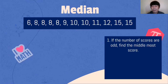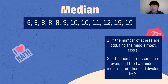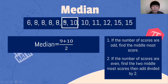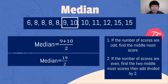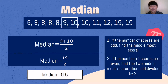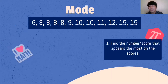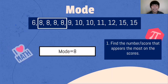Let's find the median. We have 12 scores, which is even, so we find the two middle most scores. Counting from both sides: the two middle scores are 9 and 10. We add 9 + 10 = 19, divided by 2 = 9.5. Our median is 9.5. For mode, find the number that appears the most on the scores. That is 8 — there are four 8s. So our mode is 8.